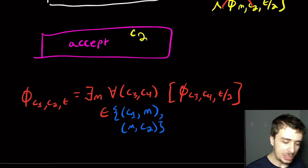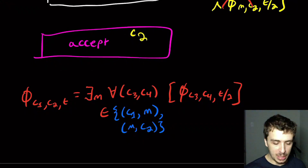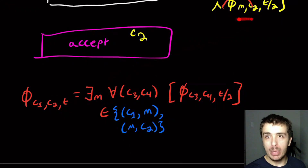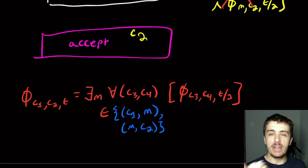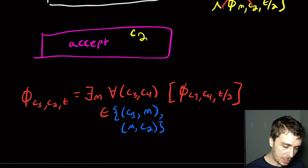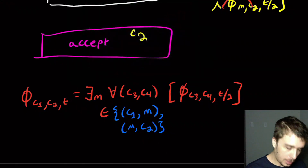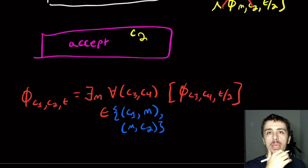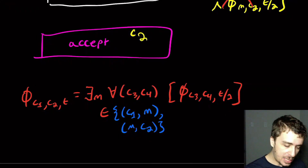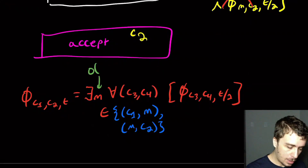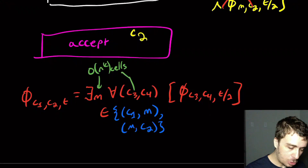The t/2 is still there; it's just that we've broken the formula into two parts using the 'for all' so the formula itself doesn't double in size. This keeps the formula polynomial in size. We need to worry about the configurations: since algorithm A runs in n^k space, configurations c1, c2, c3, c4 are each at most n^k cells, so representing them adds only a constant factor times n^k.